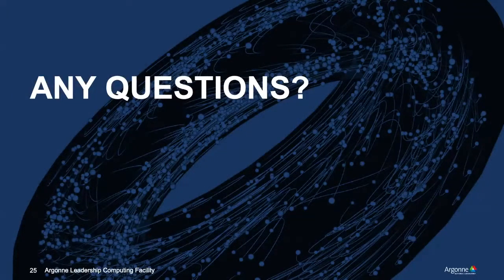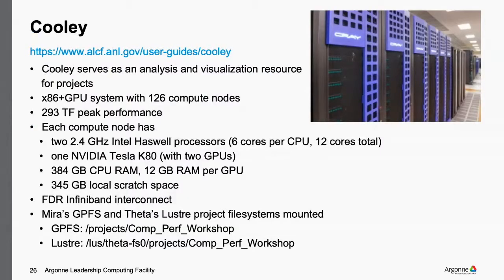Cooley is our data analysis and visualization cluster — an x86 machine with GPUs — 126 nodes, each with a couple of Haswell cores and NVIDIA Tesla K80 GPUs with good GPU and CPU memory. From Cooley you can access both the GPFS file system that MIRA sits on and the Lustre file system that Theta sits on. A common workflow: run a simulation on Theta, leave all output in the Lustre file system, then from Cooley access that data without moving it and do your data analysis and visualization there.